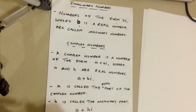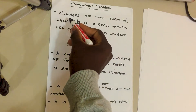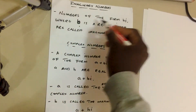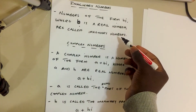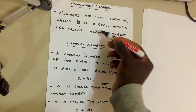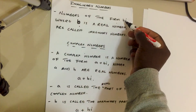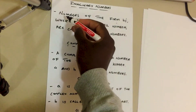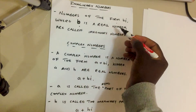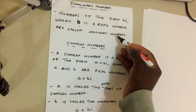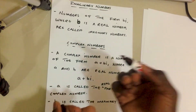By definition, numbers of the form bi, where b is a real number, are called imaginary numbers. Looking at our previous example, 5i fits this form — we can replace b with 5, and since 5 is a real number, 5i is an imaginary number.